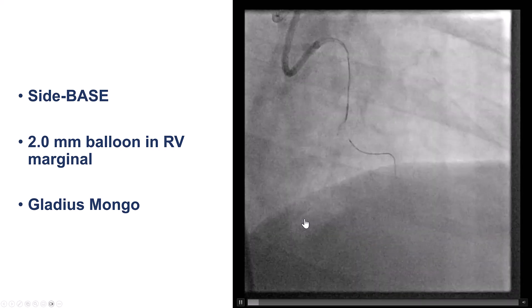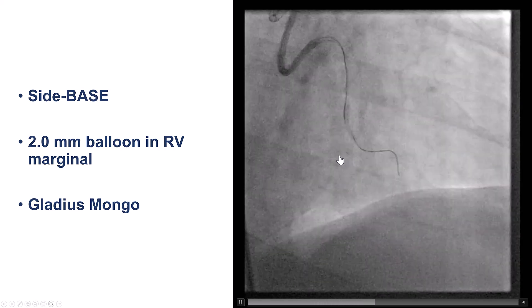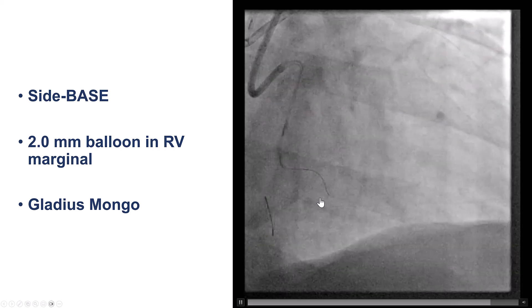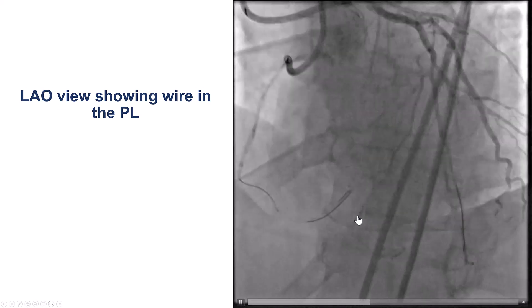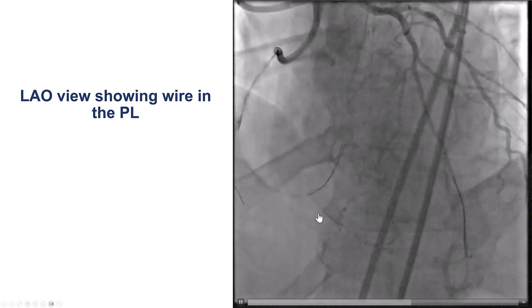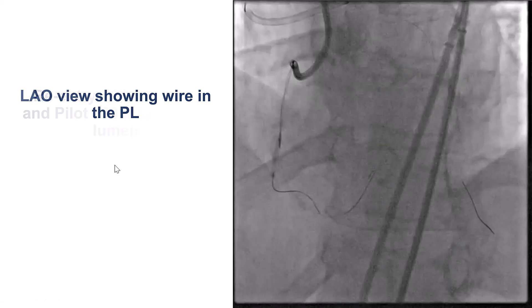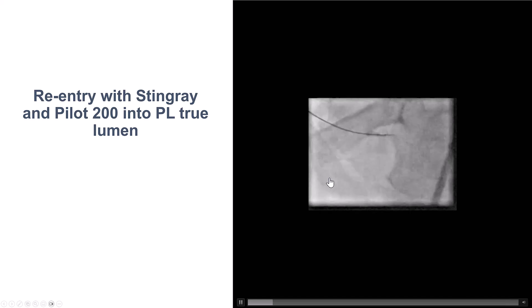The wire can then follow the course of the vessel. In this case, a Gladius Mongo avoids the acute marginal and seems to advance along the course of the right coronary artery. Contralateral injection confirmed there were extra-plaque positions along the vessel architecture, so our next step was to try reentry. We brought the Stingray balloon and tried the stick-and-swap technique with a Pilot 200 wire.